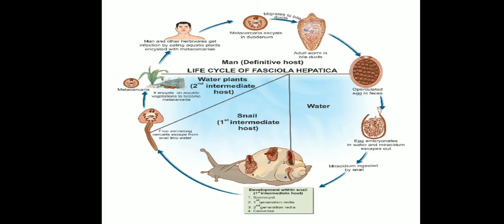The cercariae escape into the water and encyst on aquatic vegetation and blades of grass to become metacercaria, which can survive for longer periods. Sheep, cattle, or humans eating watercress or other water vegetation containing the metacercaria become infected. The metacercaria excysts in the duodenum of the definitive host and pierces the gut wall to enter the peritoneal cavity.